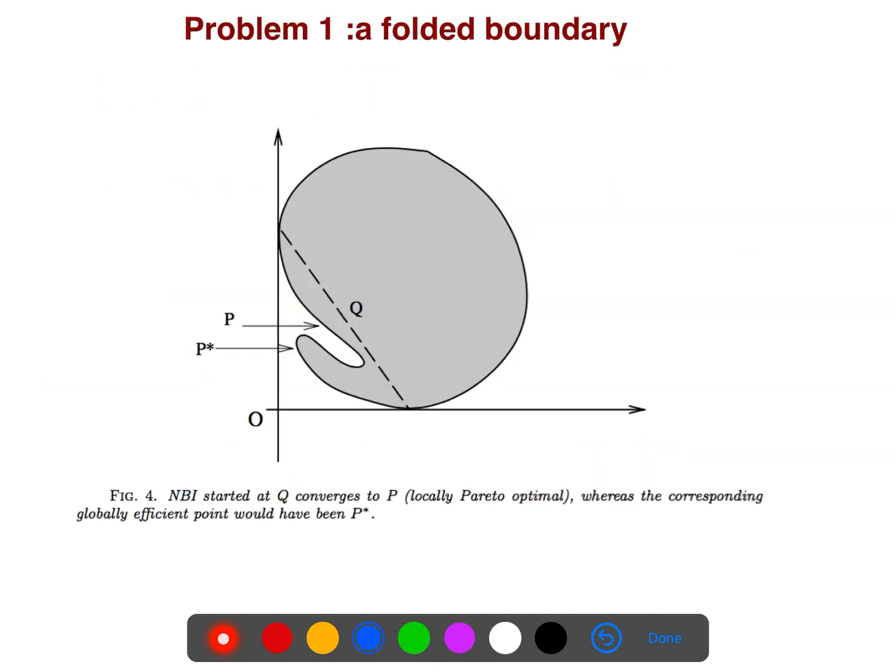And we have a problem if it is folded - we have a folded boundary. For example, I said that emanating from CHIM, emanating from CHIM until it reaches the boundary. But we are missing the better point. We are missing this one. So it's not a good idea.